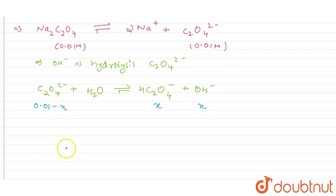In the next part, we can write down the Kh value, that is hydrolysis constant. Kh is equal to Kw, that is for water, divided by K2.